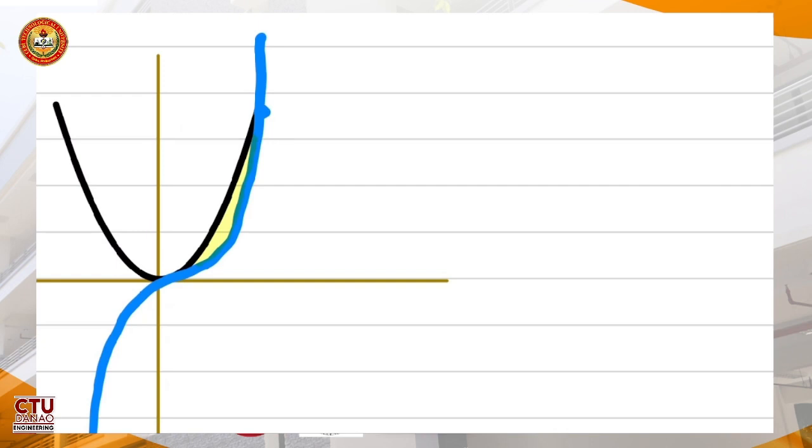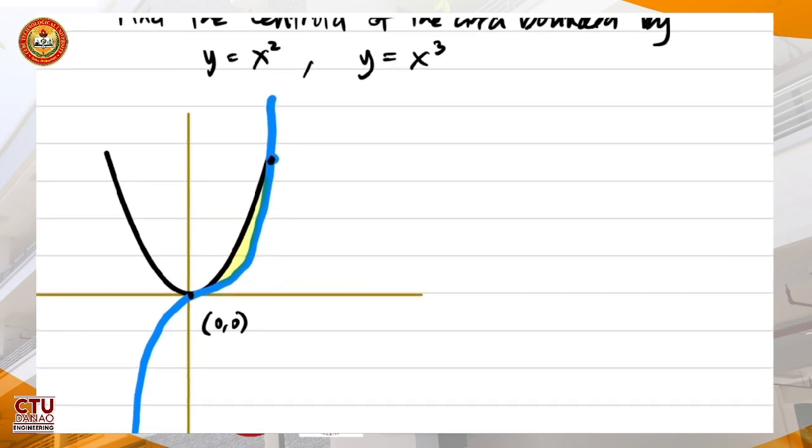Okay, these are the intersections. So let's determine the intersection first. Obviously, one intersection is (0,0), the origin. How about the other intersection? If we equate the two equations, x squared equals x cubed, or x cubed minus x squared is 0, or x squared times (x minus 1). So x is 0, that would be this, and x equals 1.